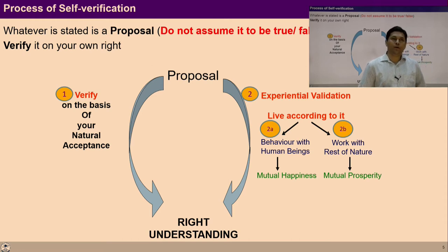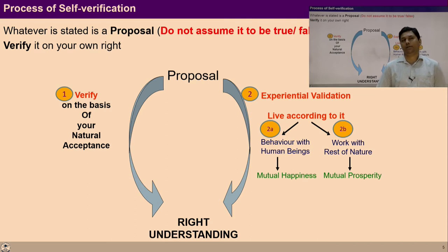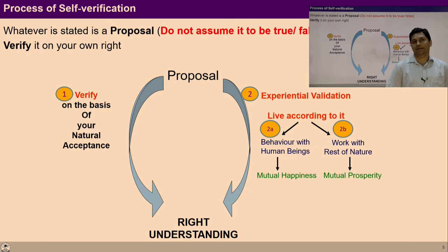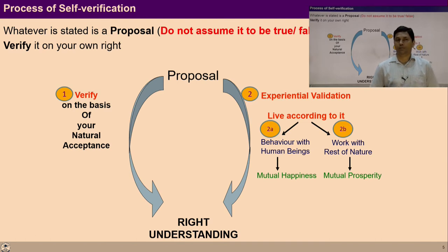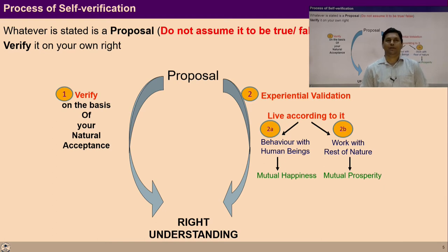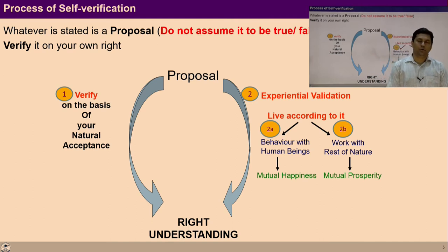Once you verify on the basis of your natural acceptance, you may experientially validate it and live according to it. The outcome would be mutual happiness when you interact with human beings, and mutual prosperity when you interact with the rest of nature. This is the process we have been talking about from UHV 2.